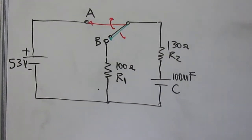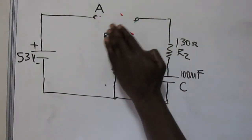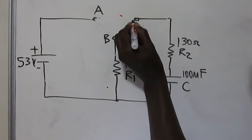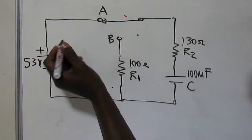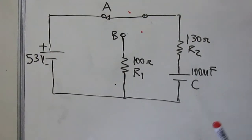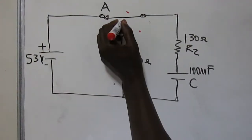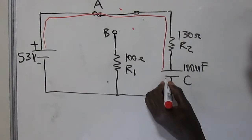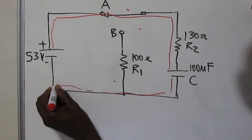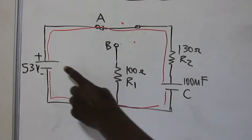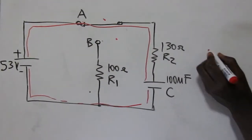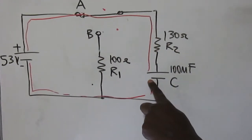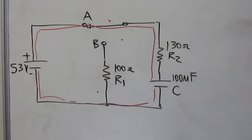The first question says the selector switch is now on point A. When it connects to point A, current will start moving. There's a short circuit on one side, so current moves through the capacitor only. Since the battery is supplying the capacitor, this is a charging scenario — it is only discharge when the battery is disconnected from the capacitor.